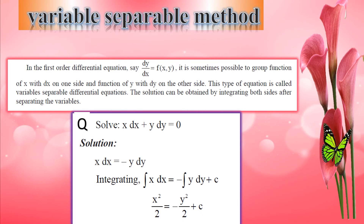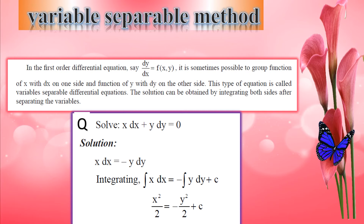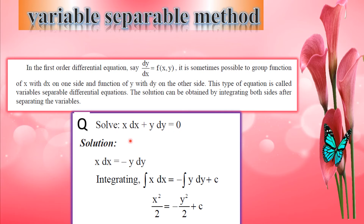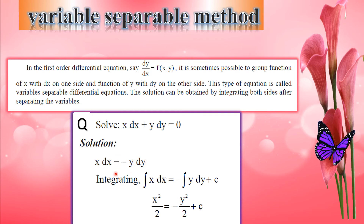Variable separable method for first-order differential equations: dy by dx equals a function. We separate x and y terms to each side and integrate both sides. For example, solve x dx plus y dy equals 0. Rearranging: x dx equals minus y dy. Integrating both sides gives x squared by 2 equals minus y squared by 2.